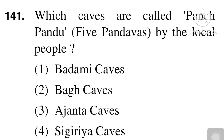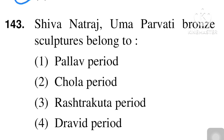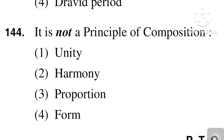Next question: which caves are called Panch Pandav (five Pandavas) by local people? Right answer is Bhagbufa, option number two. Next question: in which cave of Ajanta are maximum paintings found? Maximum paintings are found in option number four, cave number 17. Next question: Shiva Nataraja Umaparvati bronze sculpture belongs to — option number two, Chola period. Next question: which is not a principle of composition — unity, harmony, proportion, or form? Form is the right answer, option number four.